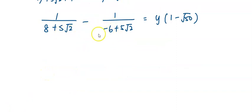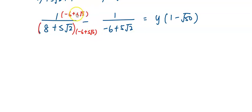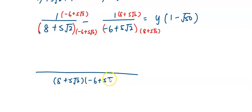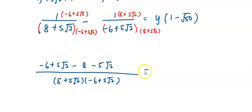Next step, I am going to equate the denominator of the left-hand side. To equate the denominator, at the first term I am going to multiply by negative 6 plus 5√2 on top and bottom. For the second term, I multiply the denominator by 8 plus 5√2, and the numerator by the same term. Inside I still have y multiplied by 1 minus 3√2.